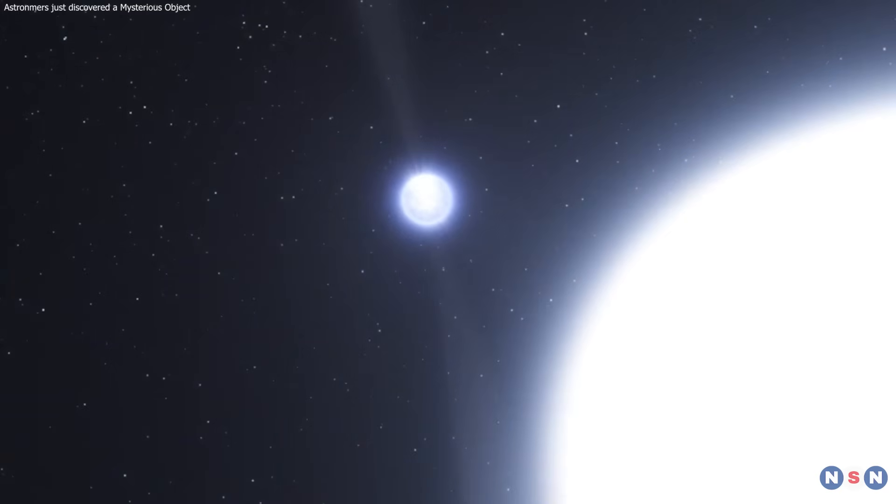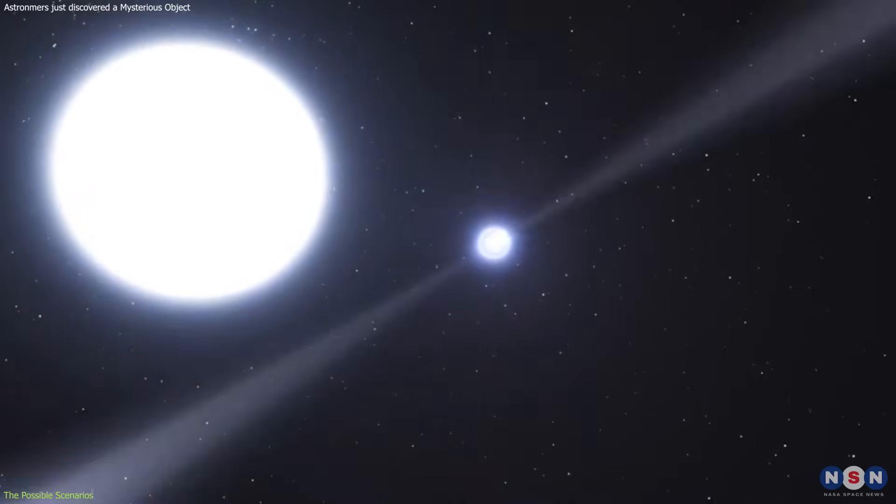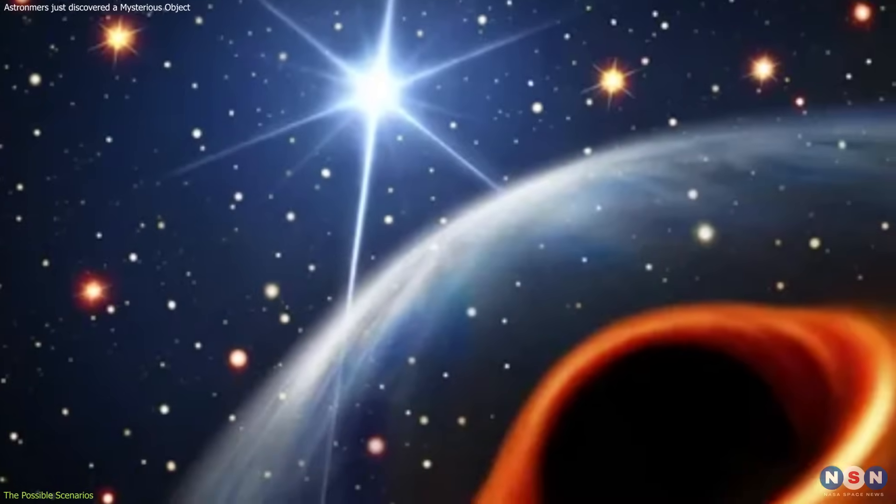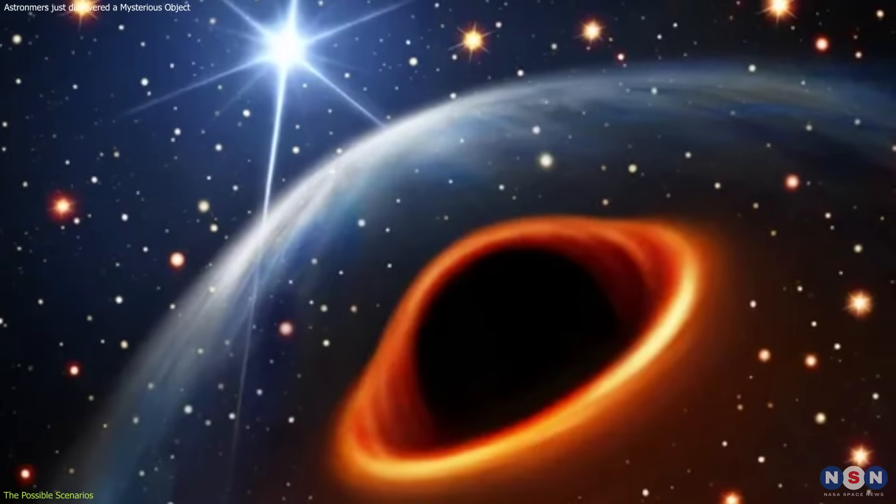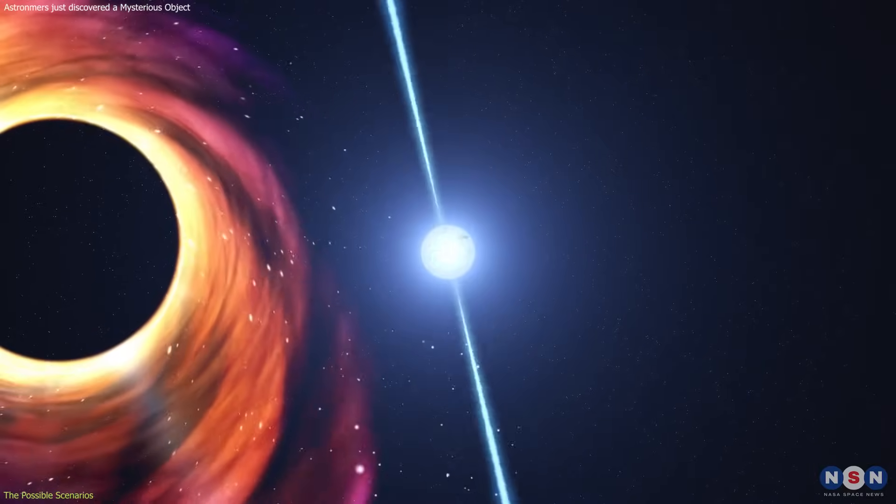There are two main possibilities for the nature of the mystery object, a very heavy neutron star or a very light black hole. But what are the features and properties of these two objects? And how do they differ from each other?